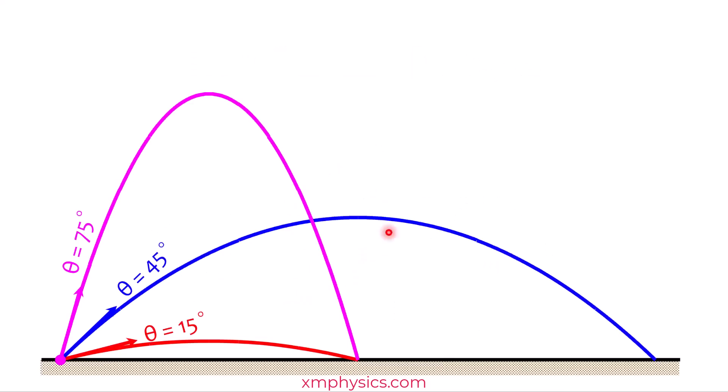So we have shown mathematically what we suspected earlier. So the maximum range is obtained at a launch angle of 45 degrees and projectiles that are launched at complementary angles like 15 and 75, they will land at the same spot.